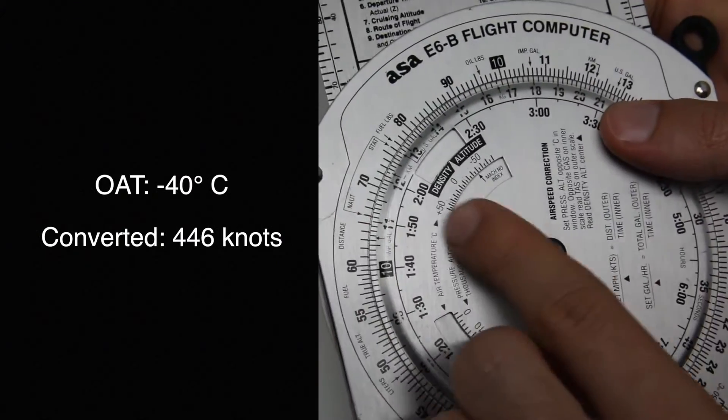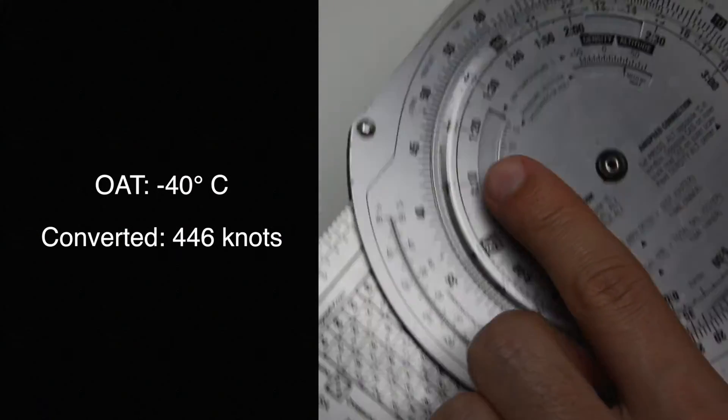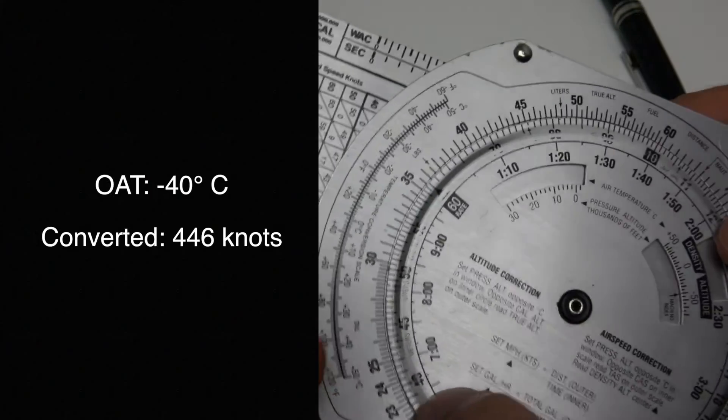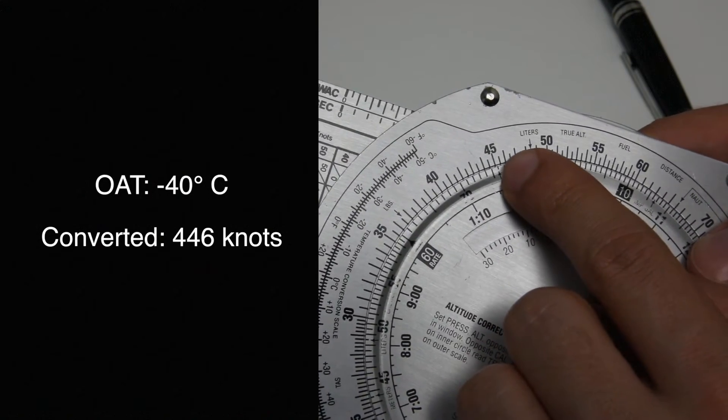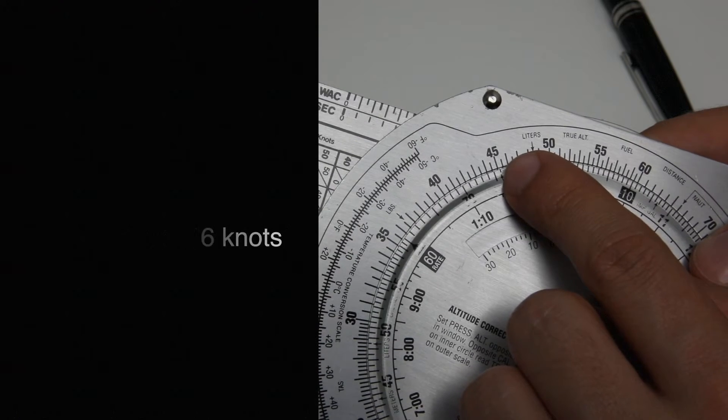And then we go out here again and now we're doing Mach 0.75. So Mach 0.75 is going to be somewhere around 446 knots. That's it.